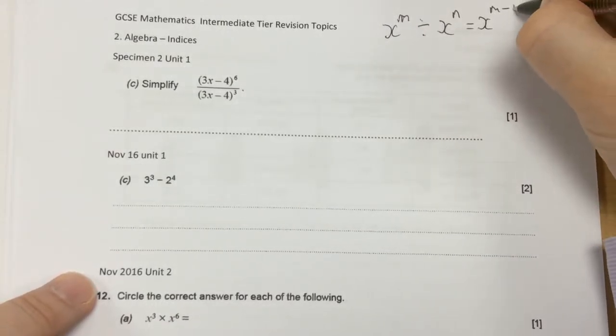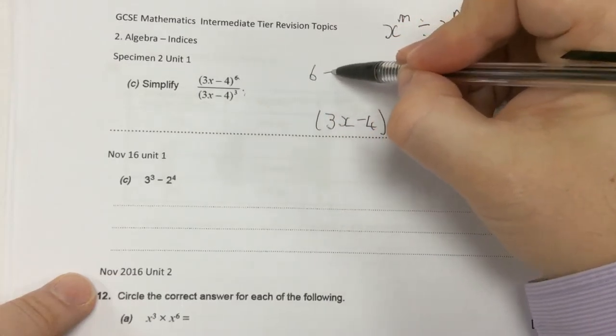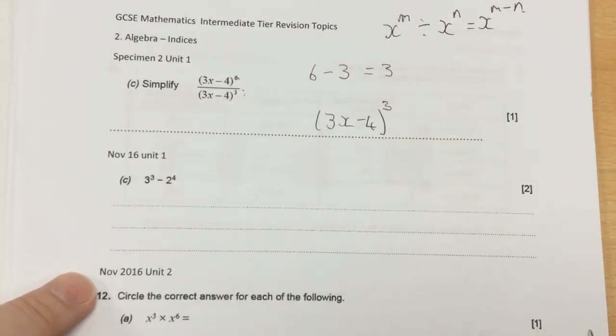So my base this time is 3x minus 4, and I'm taking the numbers away. So 6 take away 3 equals 3, so the answer to that one would be (3x minus 4) to the power of 3.